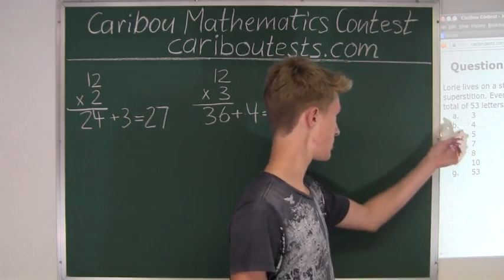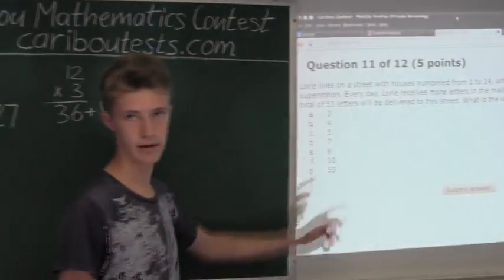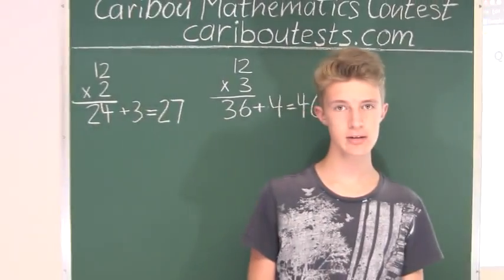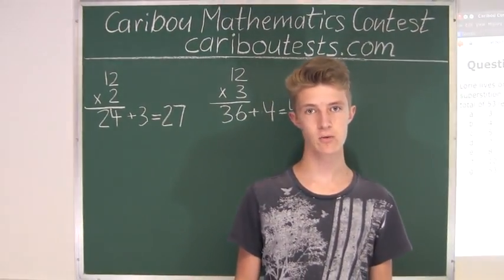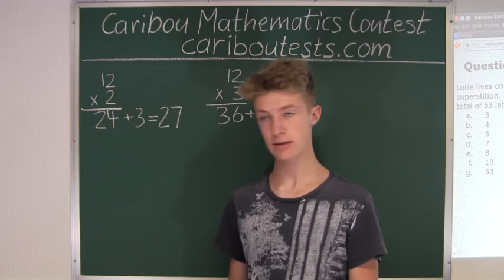which is 5. If Lori would have received 5 letters, then in this case, everyone else would have only received maximum 4 each. So 4 times the 12 other houses.